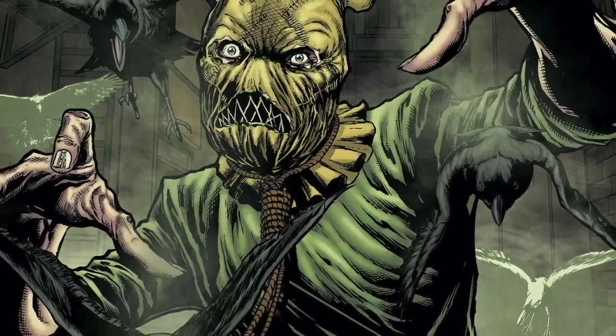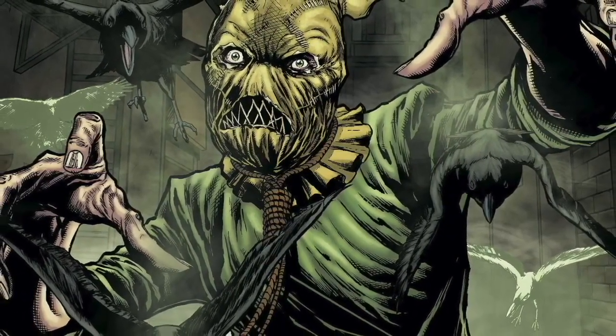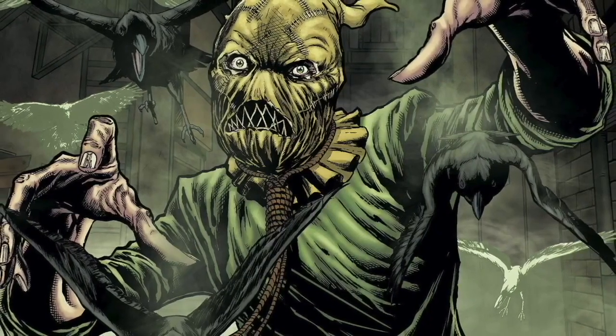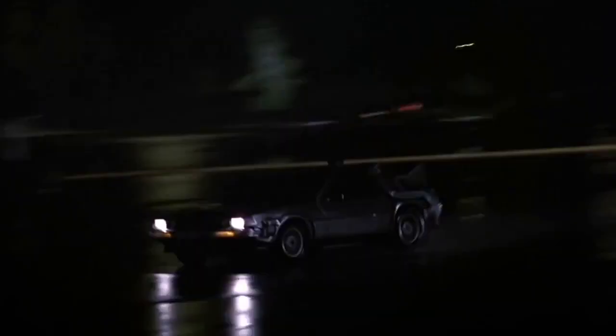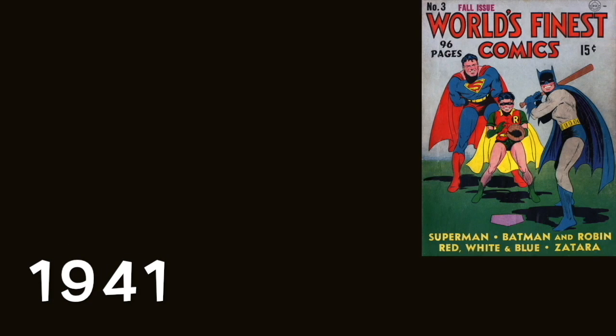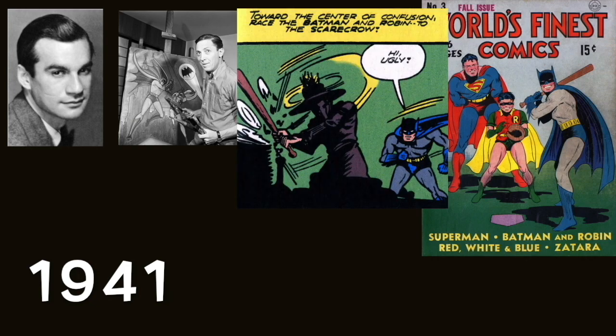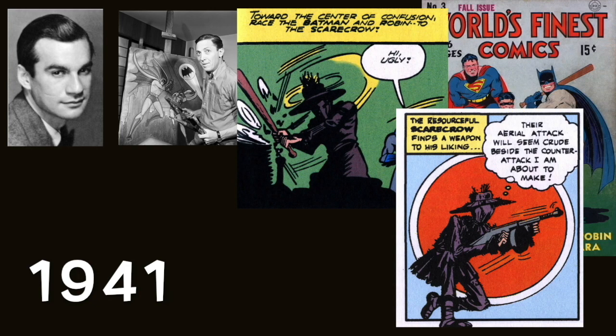Je vais expliquer comment un méchant comme L'Épouvantail est devenu populaire dans le monde des comics actuellement. Tout d'abord, voyageons un peu dans le temps. Dans sa première apparition dans le World's Finest Comics numéro 3, sorti en 1941, dessiné par Bill Finger et Bob Kane, les papas de Batman, l'Épouvantail ne fera que deux apparitions très marquantes pendant l'âge d'or, vêtu d'un costume brun et d'une mitrailleuse façon années 60.